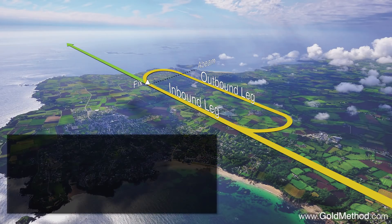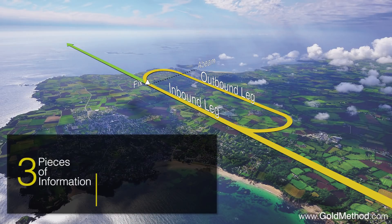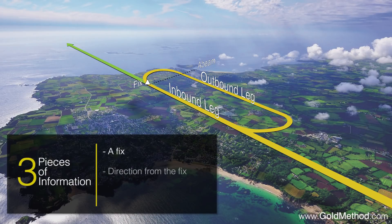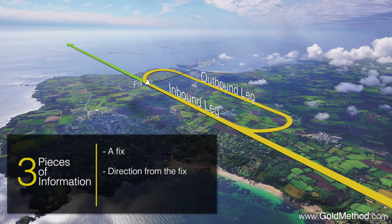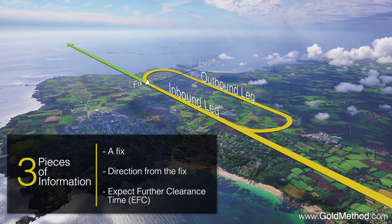If you are issued a hold, you will always be given three pieces of information: a fix to hold at, the direction for the fix of the inbound leg including the radial or airway, and an expected further clearance time, or EFC. Without these three things, you won't have enough information to fly a non-published hold. We'll go through some examples of this at the end of the video.